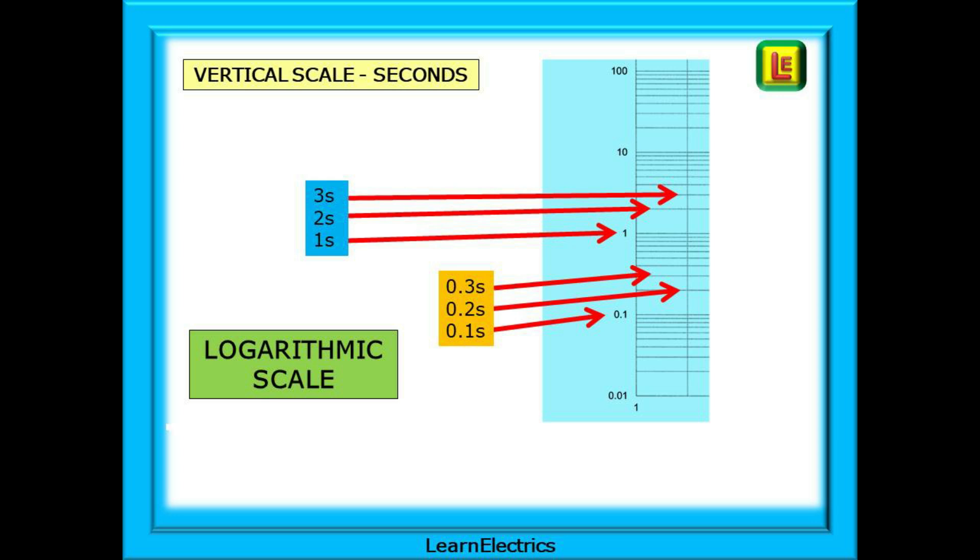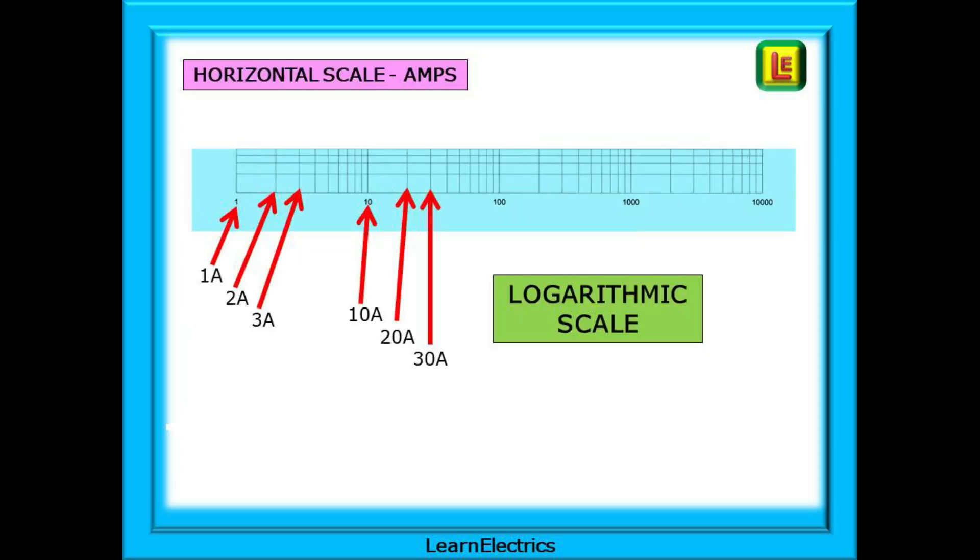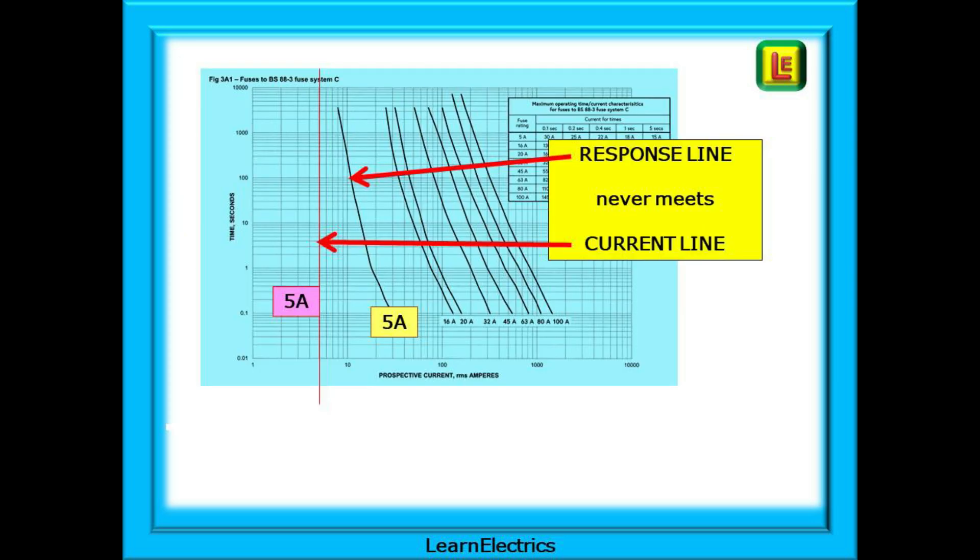Then it is 1 second intervals so 1, 2, 3 and so on up to 10 seconds. Now 10 second gaps 10, 20, 30 etc you get the idea. This method makes it accurate for small numbers and space saving for large numbers. The horizontal scale is for the amps the fault current and again this is logarithmic. 1 amp, 2 amp, 3 amp up to 10 amps then 10 amp, 20 amps and so on and with a little practice they become easy to read.